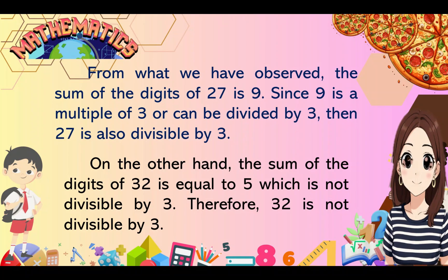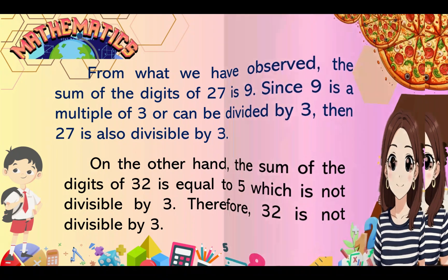On the other hand, the sum of the digits of 32 is equal to 5, which is not divisible by 3. Therefore, 32 is not divisible by 3.